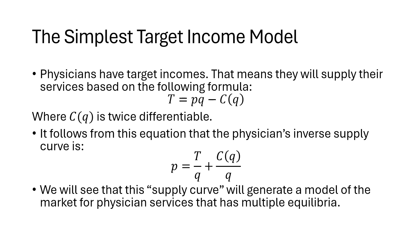The simplest target income model is as follows. Physicians supply care based on a formula that looks like a standard profit function, where T is our target income, P is the price for healthcare services provided, Q is the number of healthcare services provided, and C is a cost function which is twice differentiable. It follows that this equation can be used to generate our physician's inverse supply curve, which will generate a model of physician services that has multiple equilibria.